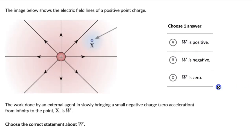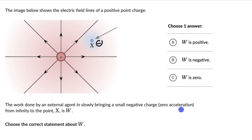The image shows the electric field lines of a positive point charge. The work done by an external agent in slowly bringing a small negative charge — with zero acceleration — from infinity to point X is W. Choose the correct statement: is this work positive, negative, or zero?